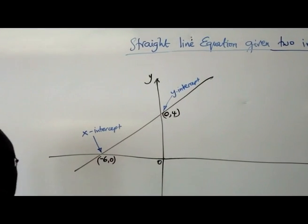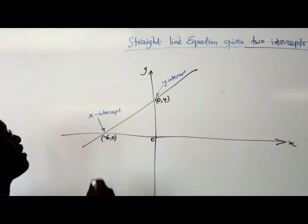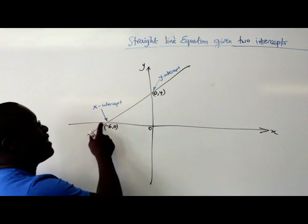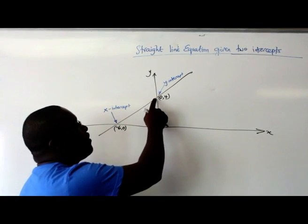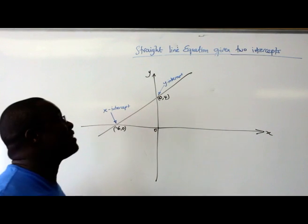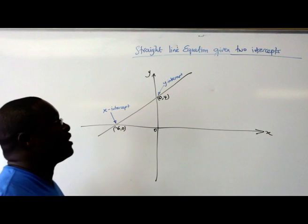Because to intercept is to meet, is to cross. We're saying that the graph crosses the x-axis at this point, that's why it's called the x-intercept. And here, the graph crosses the y-axis at that point, that is why it's called the y-intercept.